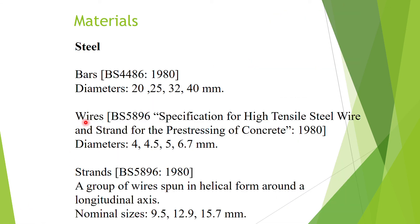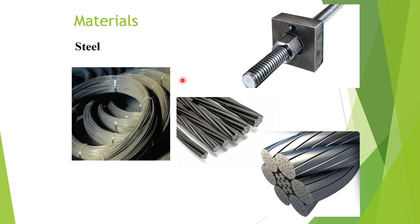The second type is wires with typical diameters of 4, 4.5, 5, and 6.7 millimeters. Wires look like normal wires but are made of very high strength and high ductility steel for pre-stressing purposes. Bar diameters are mostly similar to normal reinforcing bars, and both bars and wires have solid cross sections.